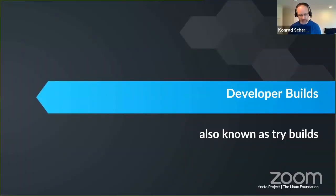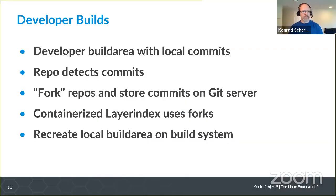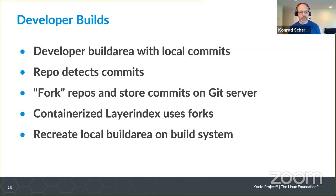So — developer builds, also known as try-builds, billbot, pre-commit workflow, etc. The scenario is: you've got a developer working away, they've got their Poky, Windows, Linux, whatever, set up with a bunch of layers, they've got some local commits they're testing, they've done run QEMU and stuff — and they think, I should be testing this on four BSPs and I'd love to do a runtime test, but I don't have access to that stuff.